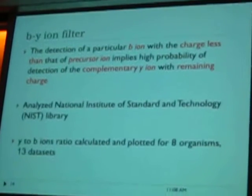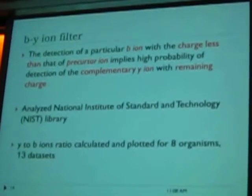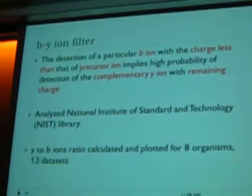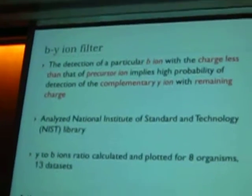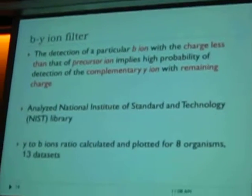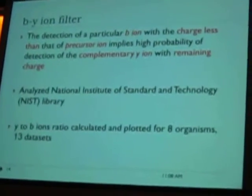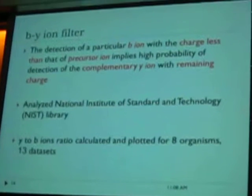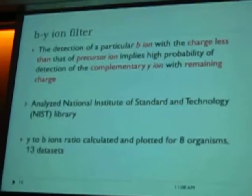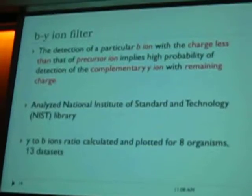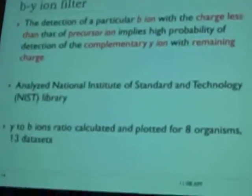What is the B-Y ion filter? It's a very simple observation: the detection of a particular B ion with charge less than that of the precursor ion implies a high probability of detection of the complementary Y ion with the remaining charge. In the sense of chemistry it looks obvious, but it is more than chemistry — it is the power of the instrument, it's about detection, and that's why it becomes important.